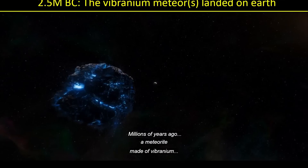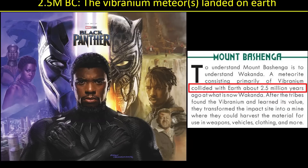We actually end up with a pretty specific date here: 2.5 million BC, when the Vibranium meteor or meteors — as we now know — land on Earth. The narration at the beginning of Black Panther simply says, millions of years ago, a meteorite made of Vibranium. Where do we get 2.5 million? There's a book called The Art of Black Panther — beautiful artwork — and it mentions that specific date. Whether it's fully canon or not, it works. So 2.5 million years ago, the meteor hit.